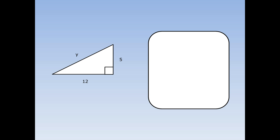For this problem, a and b are 5 and 12, and it doesn't really matter which way round they go. We've been asked to work out the hypotenuse again. So write out Pythagoras' theorem: c squared equals a squared plus b squared. Fill in the numbers — a is equal to 12 and b is equal to 5. Squaring means times it by itself, so 12 times 12 is 144, and 5 times 5 is 25. 144 plus 25 is 169.